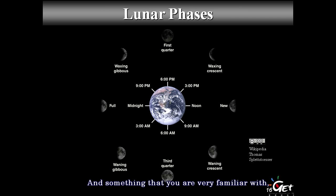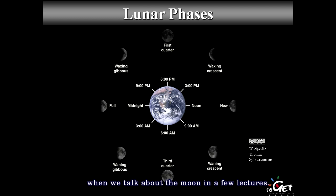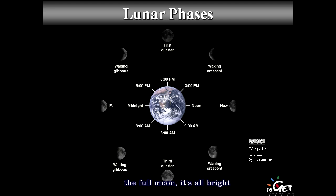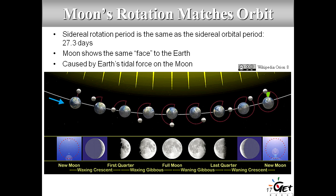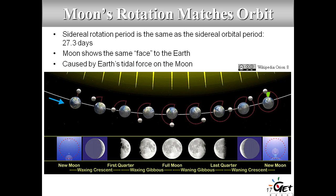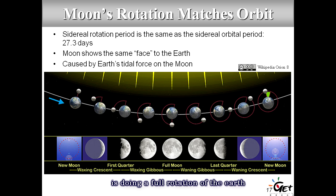You're very familiar with the Moon's phases — we'll return to this when we talk about the Moon in a few lectures. You have the full Moon when it's all bright, and the new Moon when it's all dark, with different phases in between.